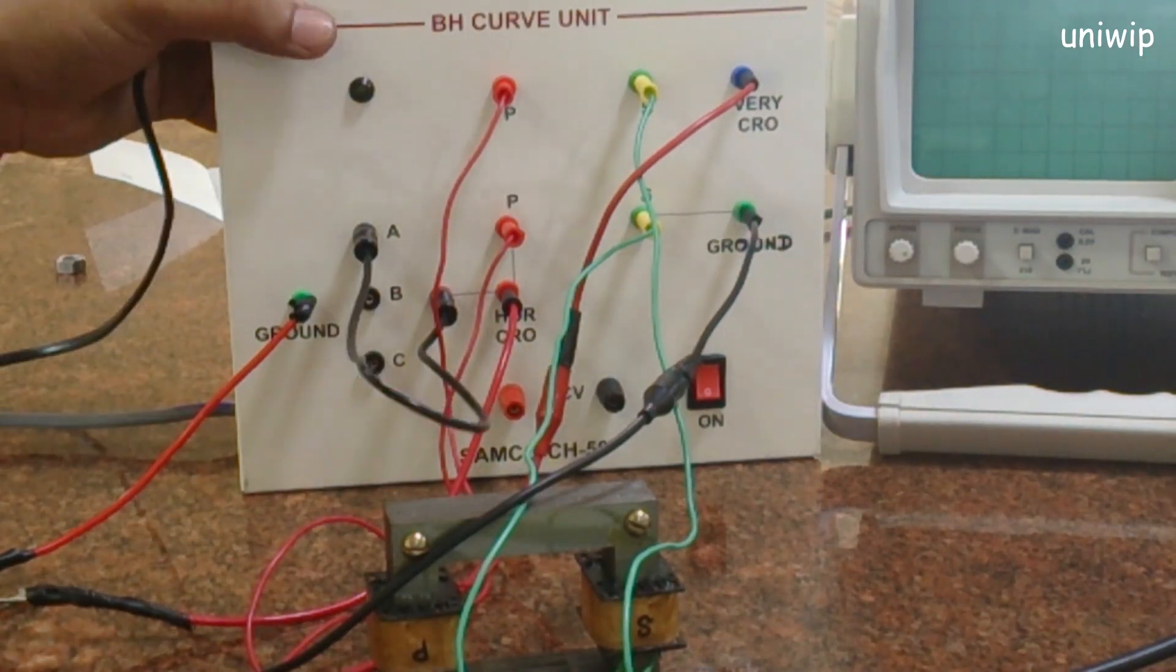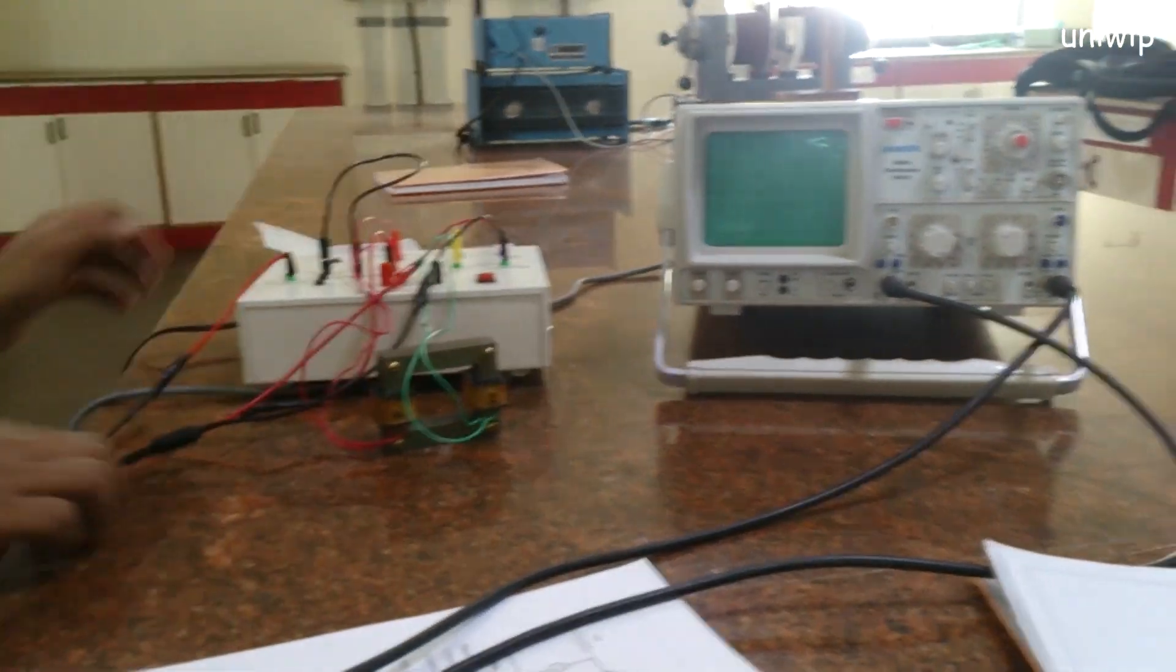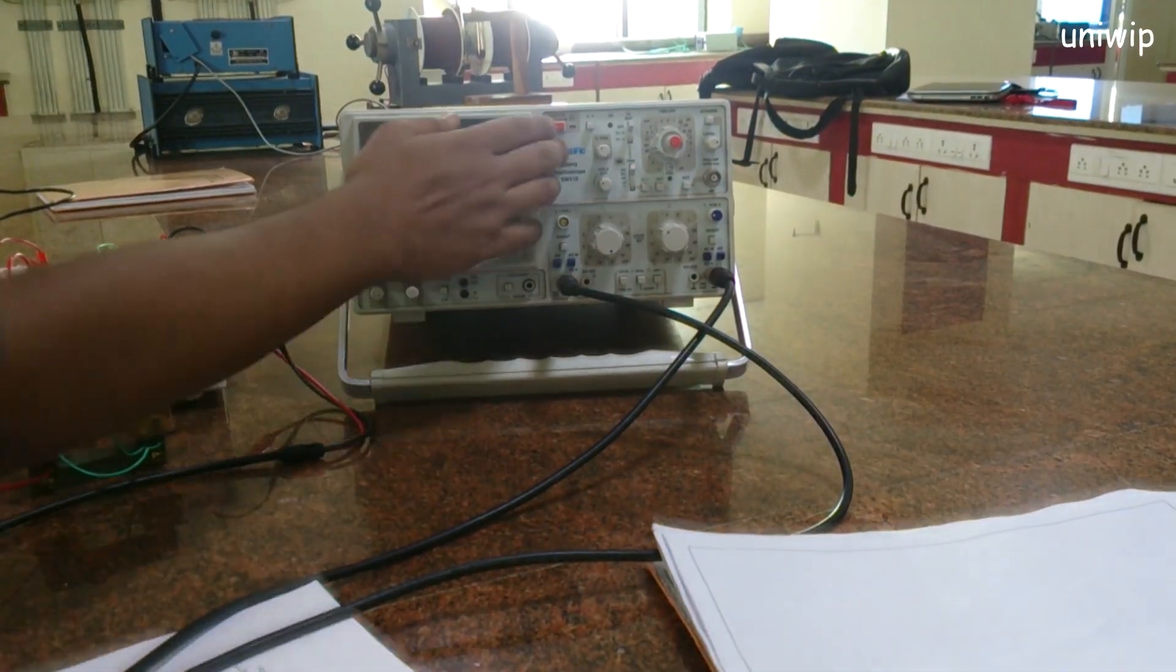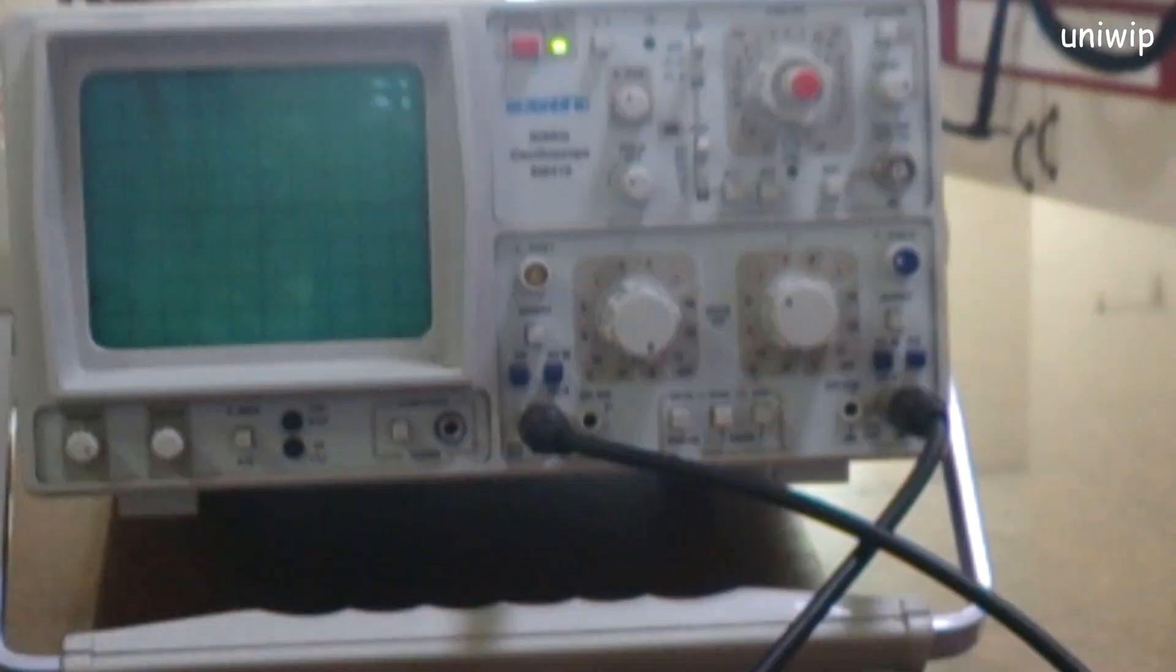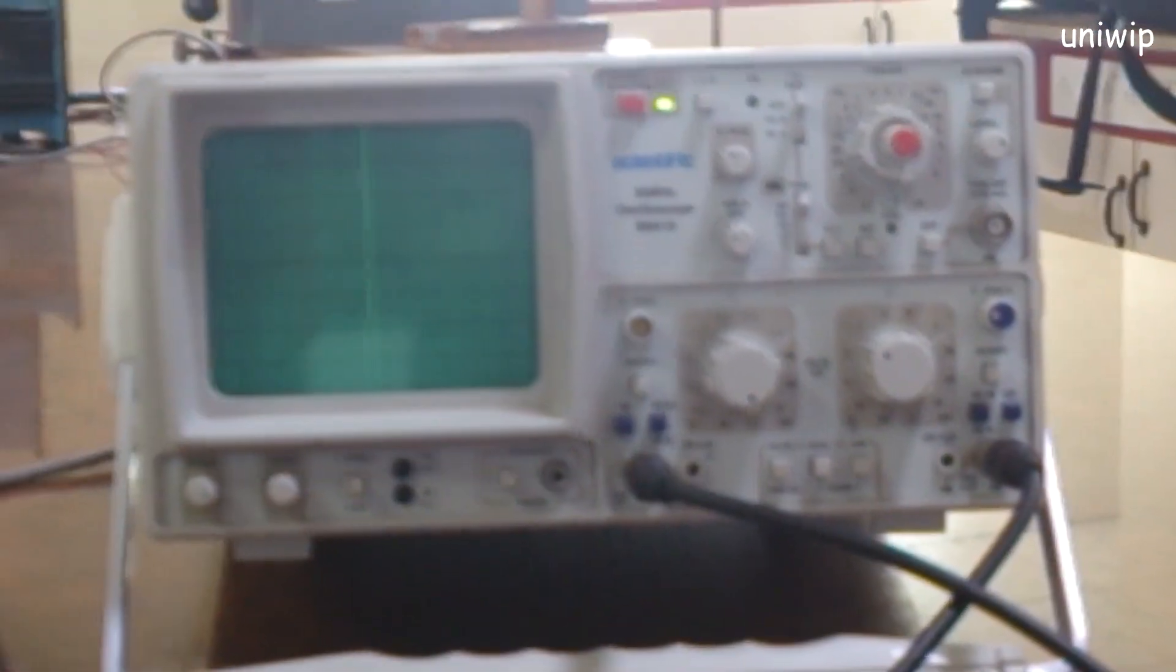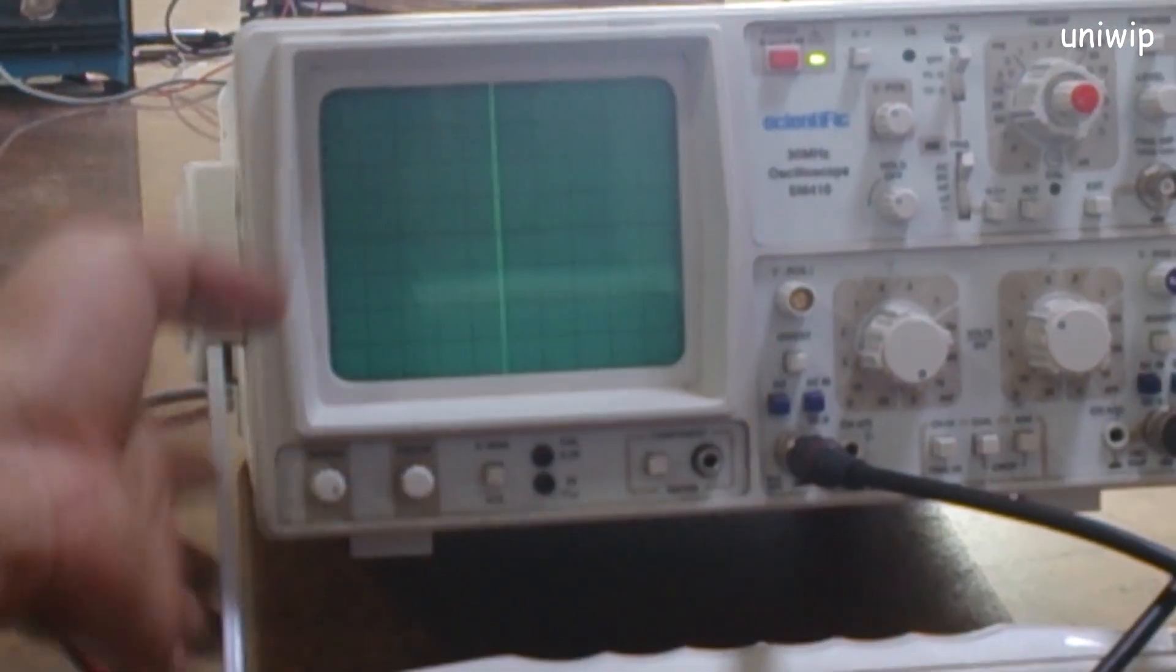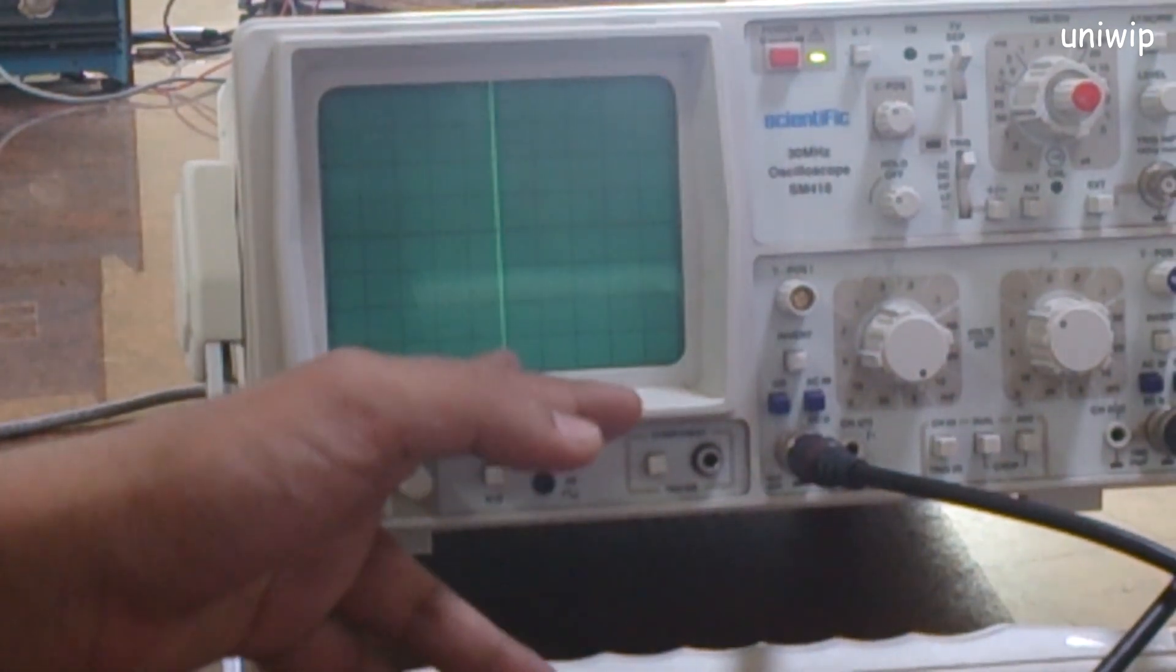Now let me open the CRO and show you how the BH curve is created. I'm opening my CRO, opening my setup. Now you have to wait for a minute. In some conditions, as you can see, right now I'm only facing a straight line.